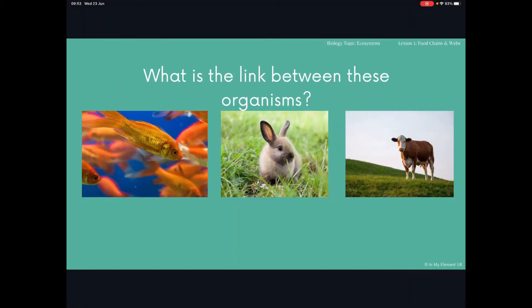To start the lesson we need to have a little think about what the link is between these organisms. You've got a goldfish, a rabbit and a cow. They all have something in common and it's all to do with what they eat. All of these organisms eat a form of green plants, so they feed off of a producer, and we're going to look at how that producer fits into what we know as a food chain.